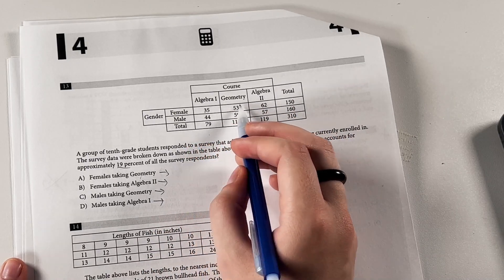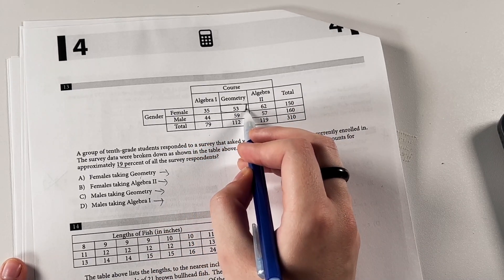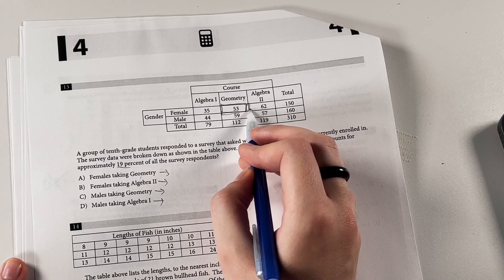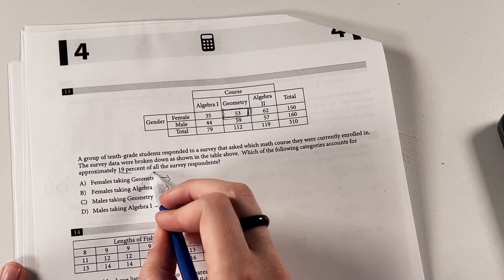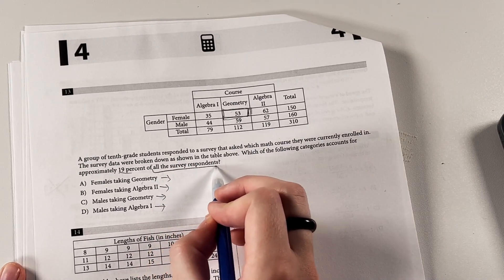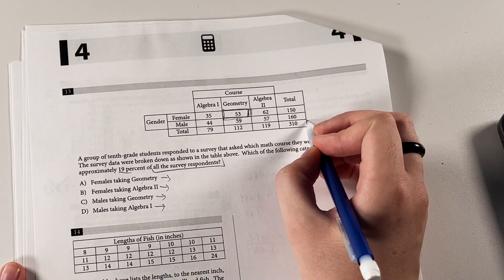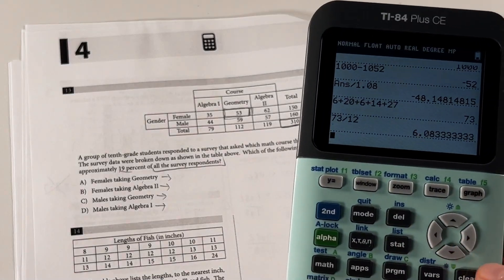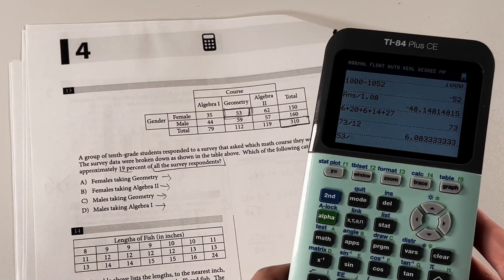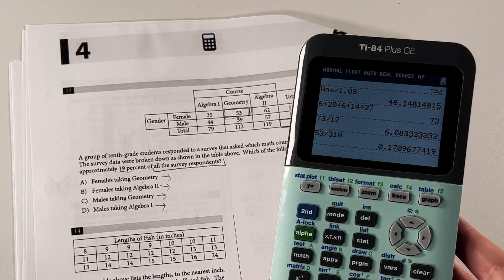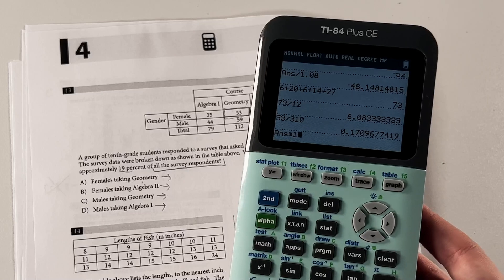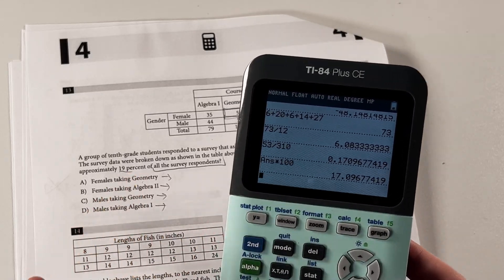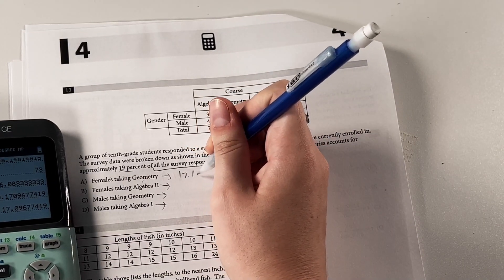So we're looking for females taking geometry. So that box would be the female and geometry box. So it would be that. And then, so that's the amount of females taking geometry. And then we would divide that by the total number of survey respondents, since we're looking for all of the survey respondents. So that total is going to be this biggest number. So this is where you kind of have to use the calculator, unless you want to suffer. Okay, so that's only 17.1%-ish. You can multiply it by 100 to get actual percent. So we get 17.1 for that.